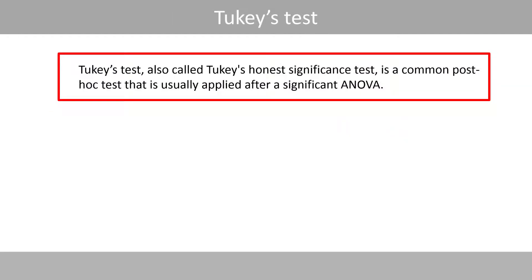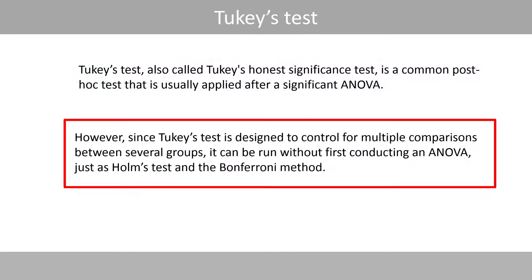Tukey's test, also called Tukey's honest significance test, is a common post-hoc test that is usually applied after a significant ANOVA. However, since Tukey's test is designed to control for multiple comparisons between several groups, it can be run without first conducting an ANOVA, just as Holm's test or the Bonferroni method.